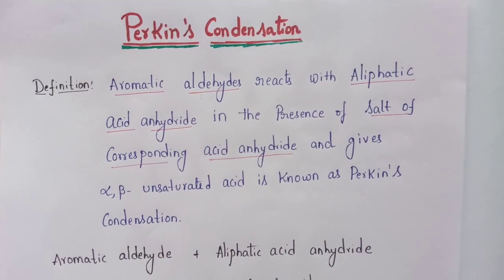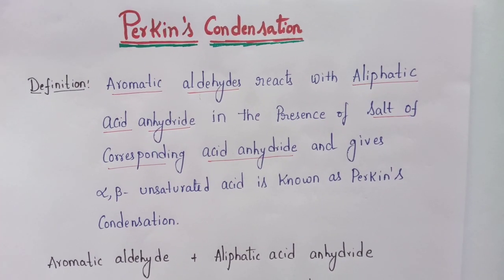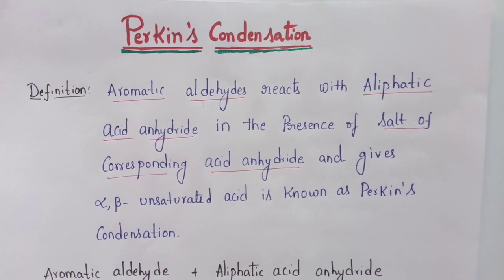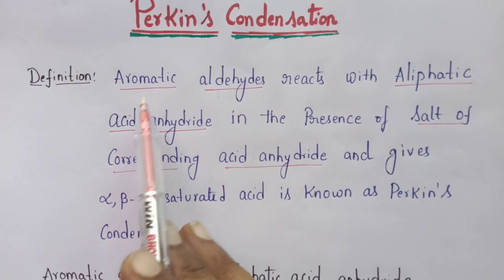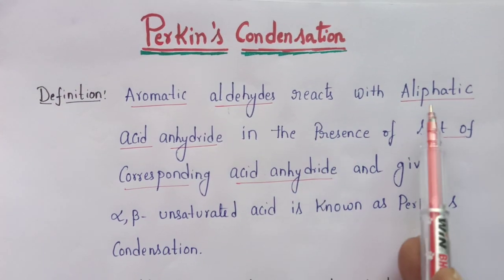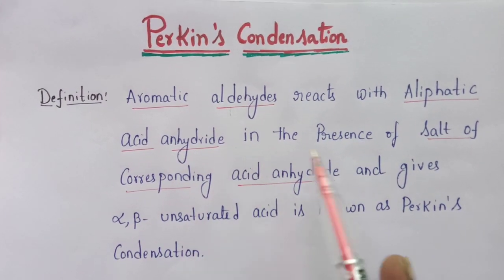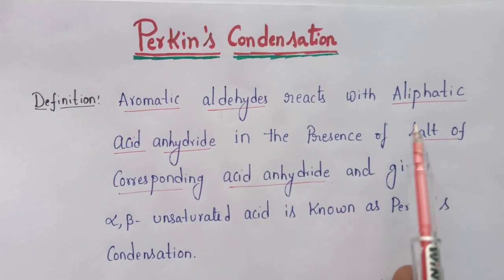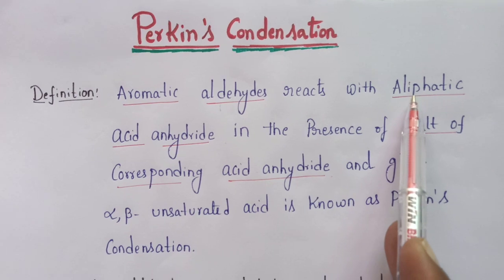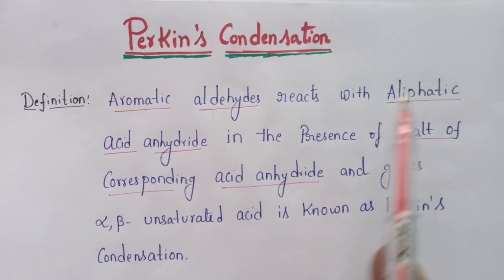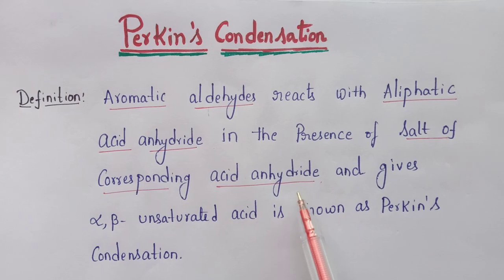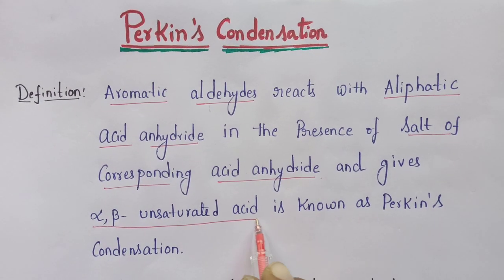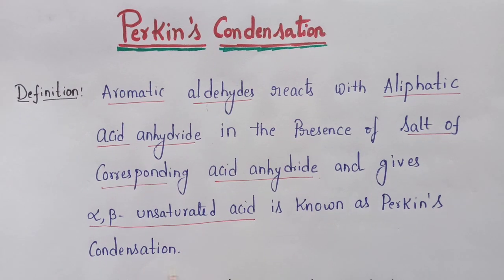In this video, I would like to explain Perkin's condensation. Perkin's condensation is when an aromatic aldehyde reacts with an aliphatic acid anhydride in the presence of the salt of the corresponding acid anhydride — whatever aliphatic anhydride we are using, its respective acid salt is used — and finally it gives an alpha-beta unsaturated acid.